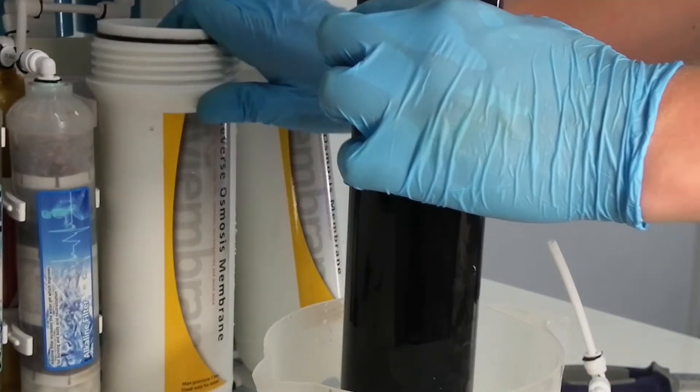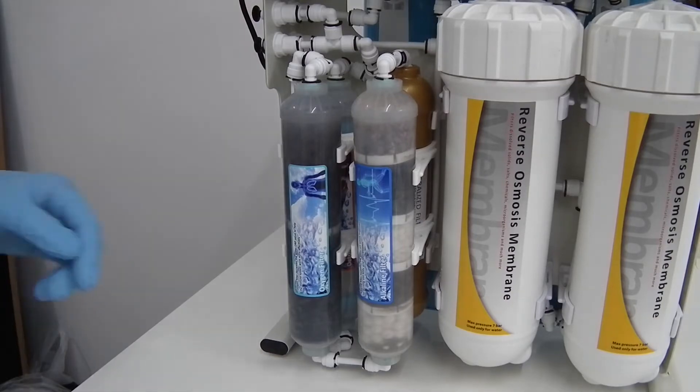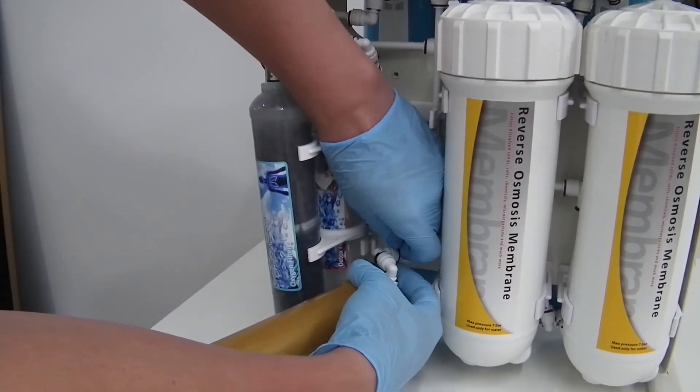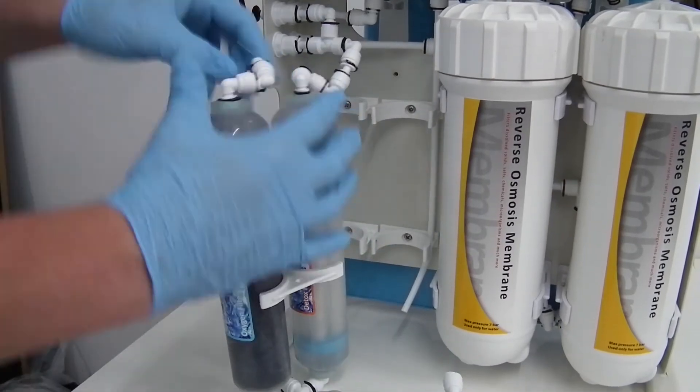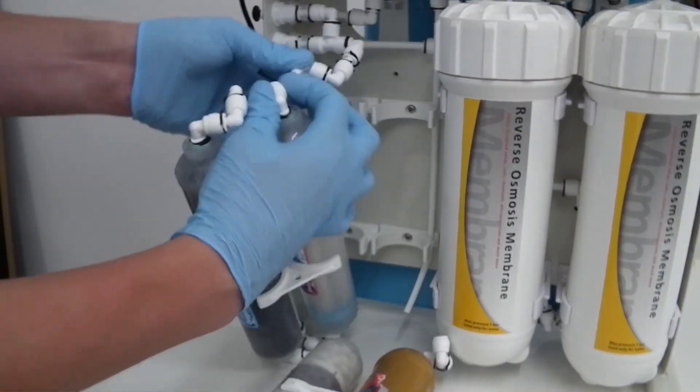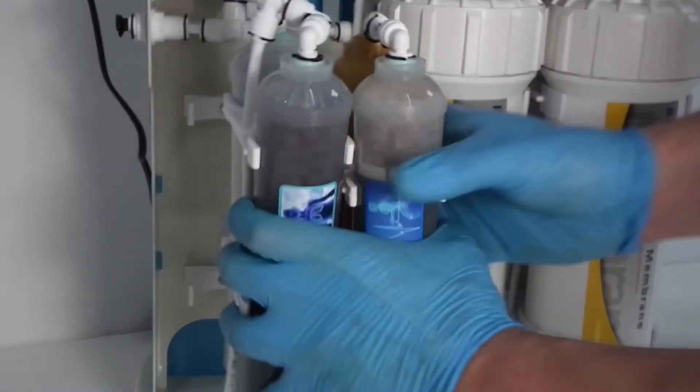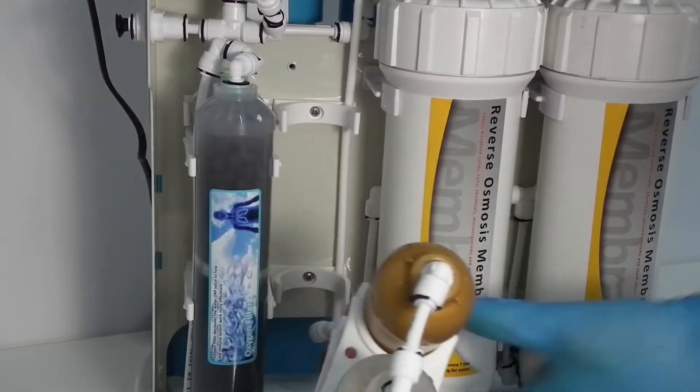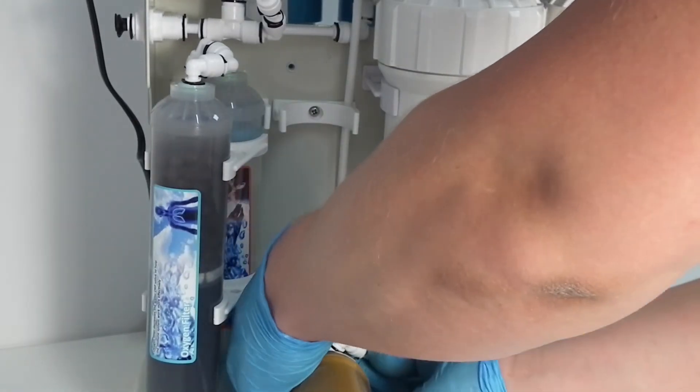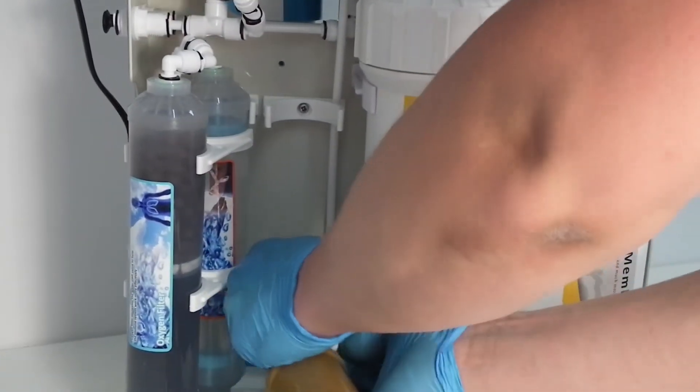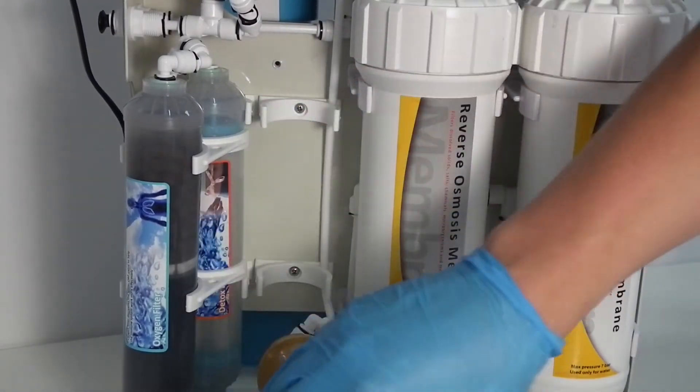To remove the post filters, there are two push-fit connections we need to disconnect. First the inlet to the filters, and secondly outlet from the filters. Please have a cloth with you if there is some water leaking from the filters. To fit the new set of post filters, attach the filter set into the filter holder at the back of the unit. Next step is to connect the right-hand side stem fitting into the inlet of the mineralizing filter, and then connect the left-hand side stem fitting into the outlet of the detox filter. Make sure to secure the filter set properly into the filter holder and fit back the clips to secure the push-fit connections.